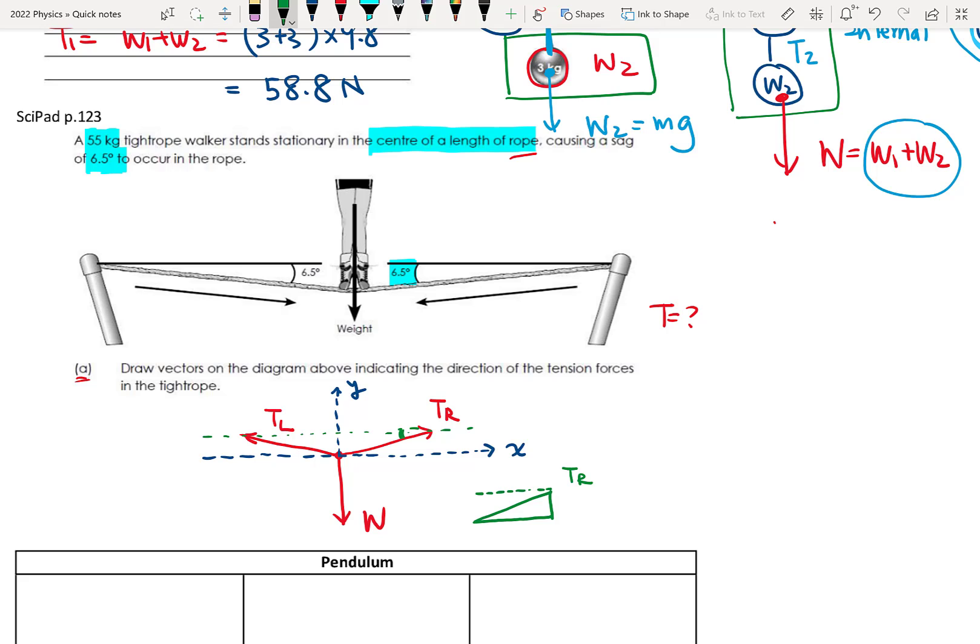And then we have the, they tell us the angle here is 6.5 degrees, but because you can see here is 90 degrees. So if I do angle one, theta one and this angle, theta two, we can see theta one plus theta two equals to 90 degrees. And also here is 90 degrees.